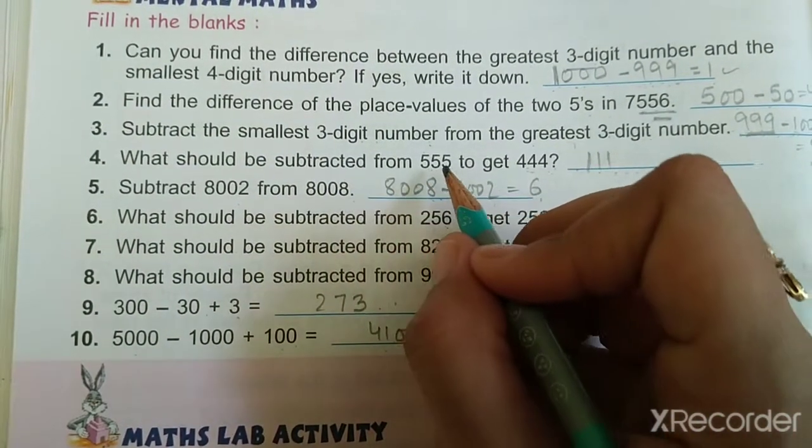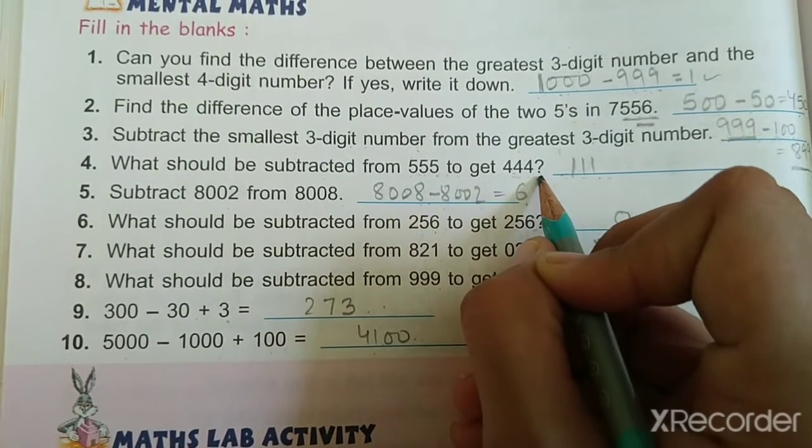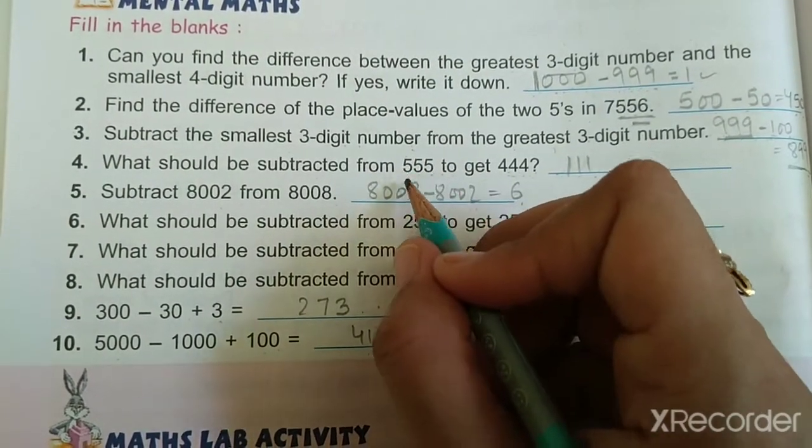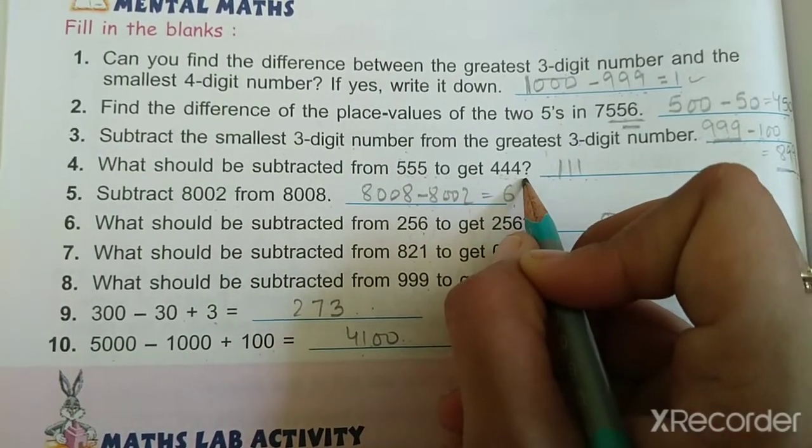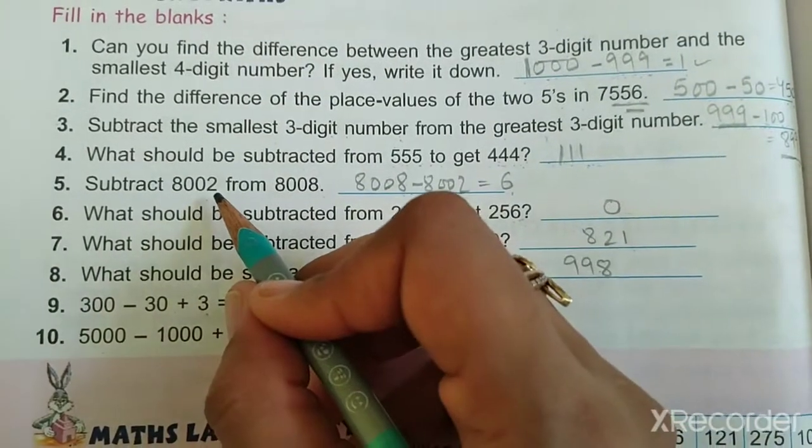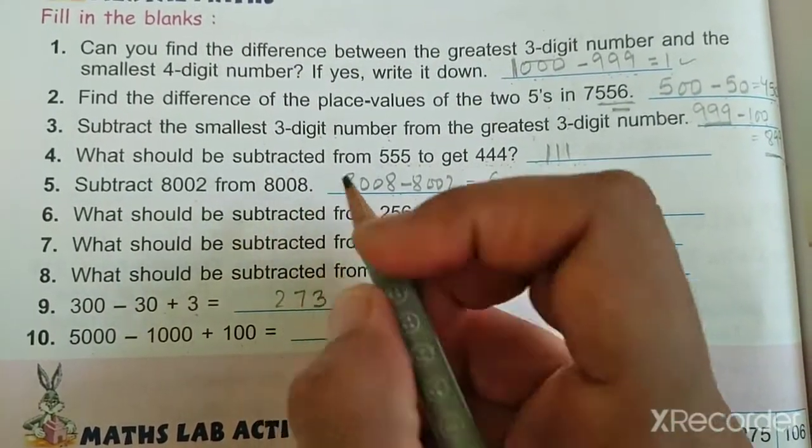What should be subtracted from 555 to get 444? Everyone, clearly we can see that if we subtract 111 from 555, we get 444. So the answer is 111.